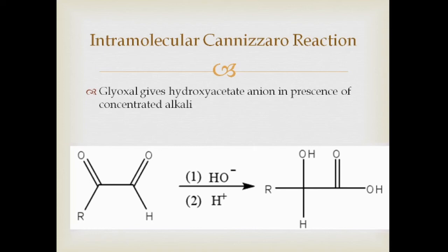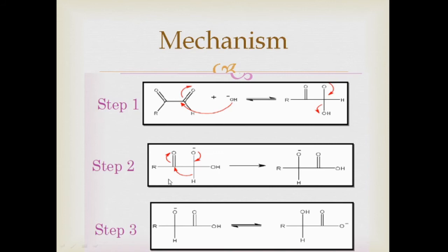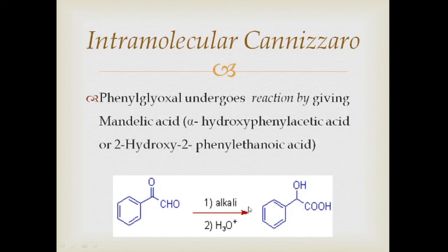Even aromatic substrates are known to undergo cross Cannizzaro's reaction. The mechanism is similar: first, a reducing anion is formed by the interaction of the aldehyde with hydroxide ion; then the anion transfers the hydride ion intermolecularly to the carbonyl carbon within the molecule; then formation of a carboxylic acid and an alkoxide ion occurs; and the shift of a proton finally results in the product. An intramolecular example: phenyl glyoxal undergoes reaction giving mandelic acid.